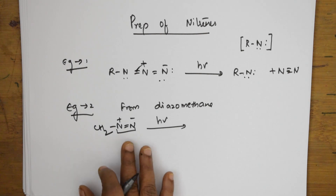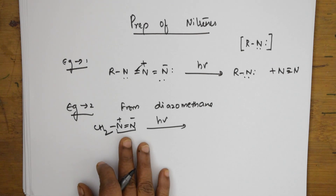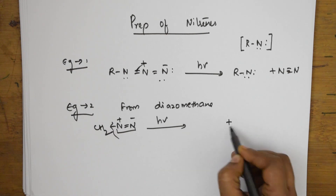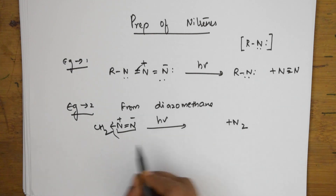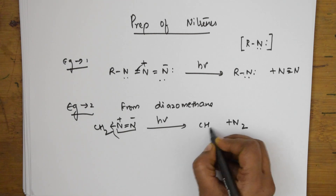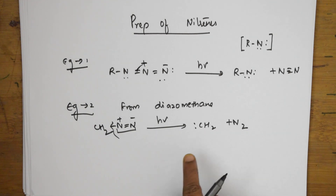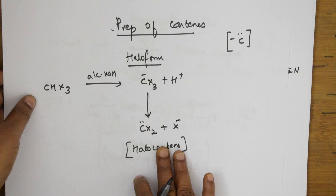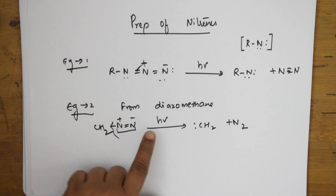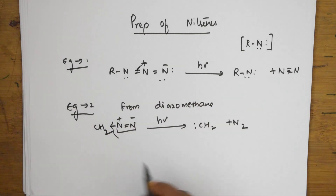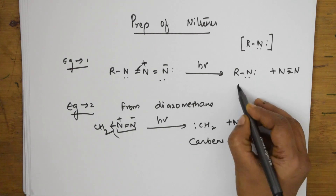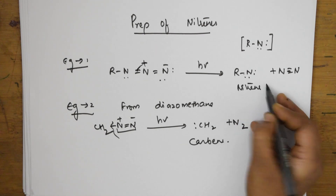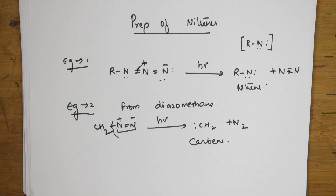The nitrogen part cleaves — in diazomethane, cleavage occurs at the C–N bond, releasing N₂. Important note: from this reaction, we are actually forming a carbene (not nitrene) — specifically from diazomethane we get :CH₂ carbene. So we have two preparations for carbene: one from haloform reaction and one from diazomethane. The nitrene preparation was from the alkyl azide.